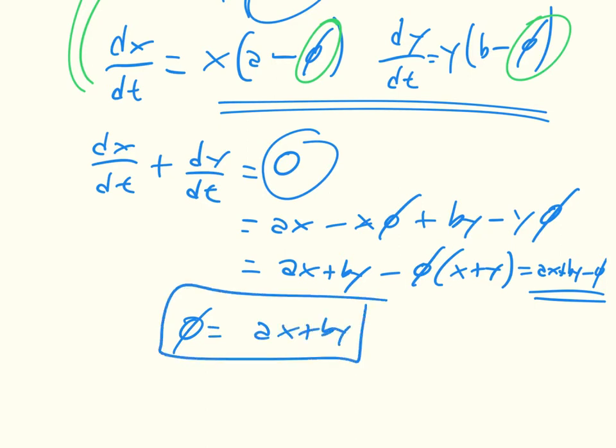And remember, phi is the rate at which we take things away from the population. And in fact, it's just equal to the average fitness. It's equal to that average rate of increase.